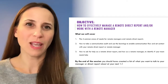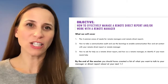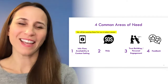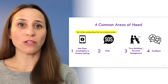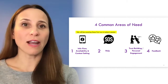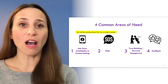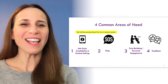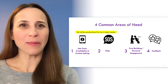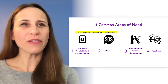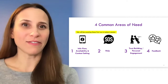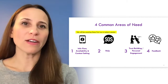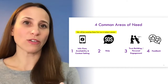How to ask for help as a Remote Direct Report, and how as a manager to make sure that you know when your Direct Report needs help. By the end of the session, you should have a tangible list of things to talk about at your next one-on-one with your manager or your Remote Direct Report. The four common areas of need are: information flow, availability, and context setting; help — how to ask for it and receive it; trust building and personal engagement building; and feedback — how to give and receive it. In this module, we'll only cover the first two areas in depth, and for each I'll address what both the manager and the Direct Report needs.